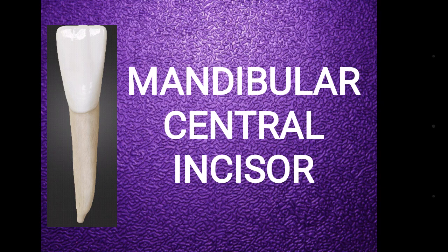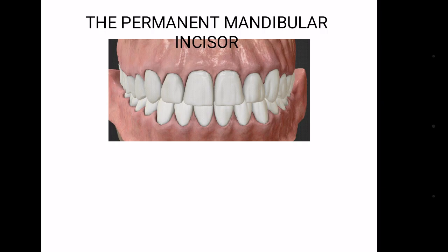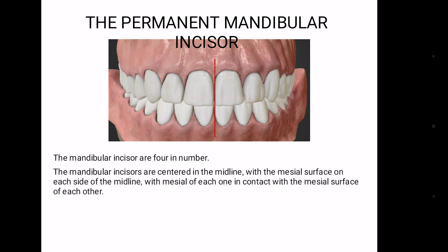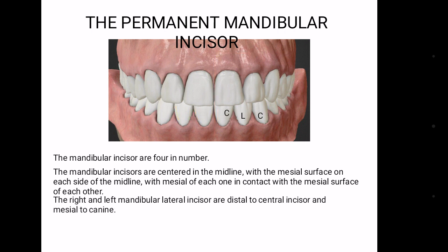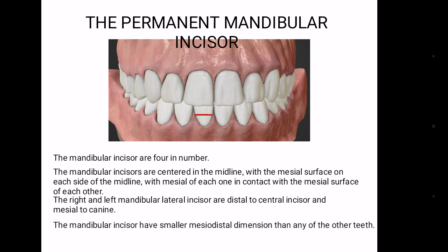Before getting started with mandibular central incisor, let's have a quick introduction to permanent mandibular incisors. These are four in number. Mandibular central incisors are placed centrally in the mandible with one on each side of the midline, and they have their mesial surface in contact. The mandibular lateral incisors are distal to central incisors and mesial to the canine. The mandibular incisor has a smaller mesio-distal dimension than any of the other teeth.